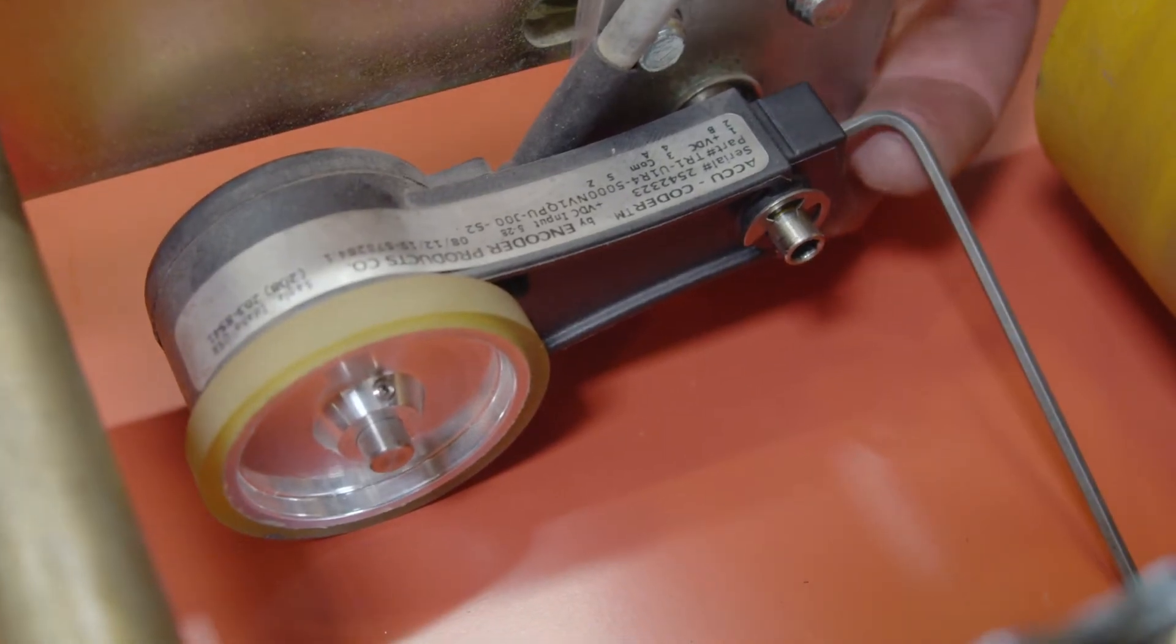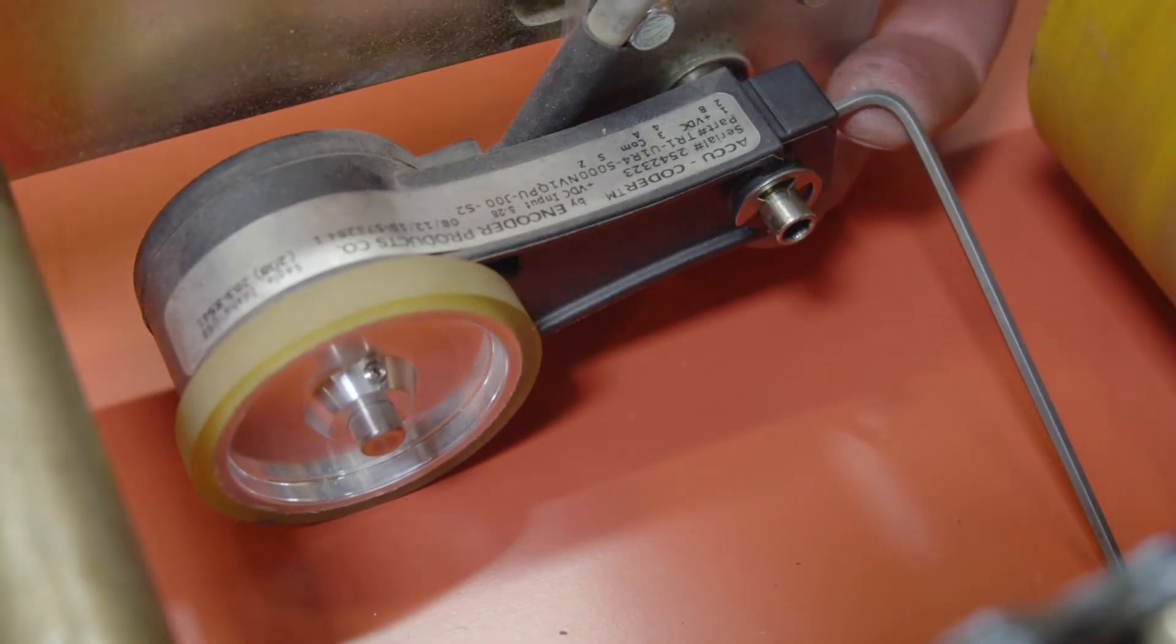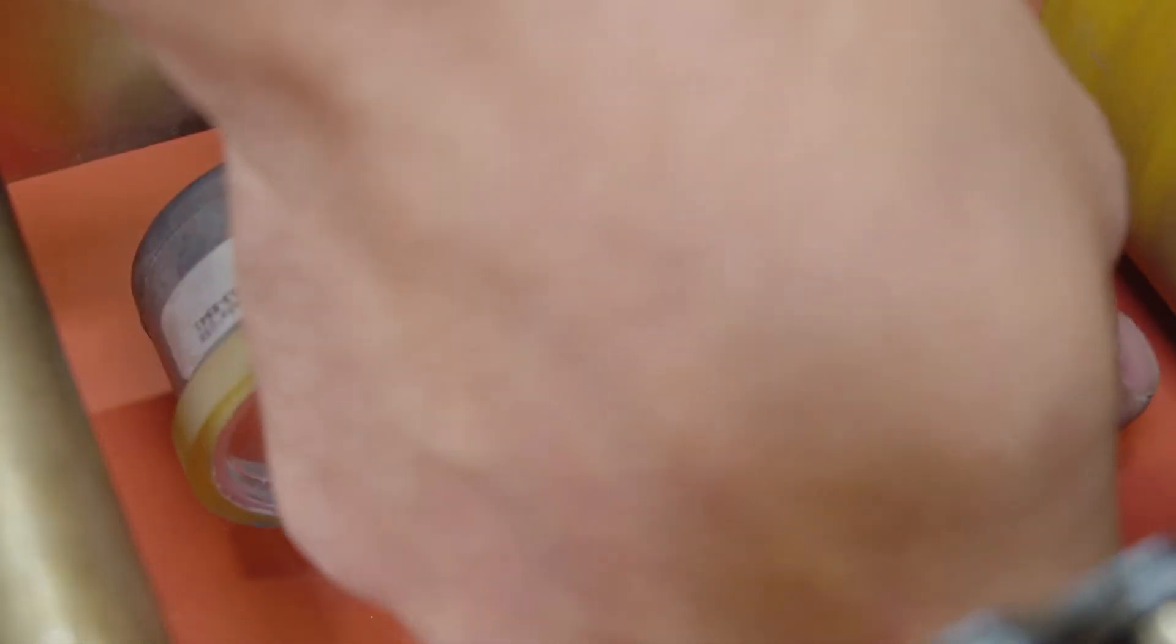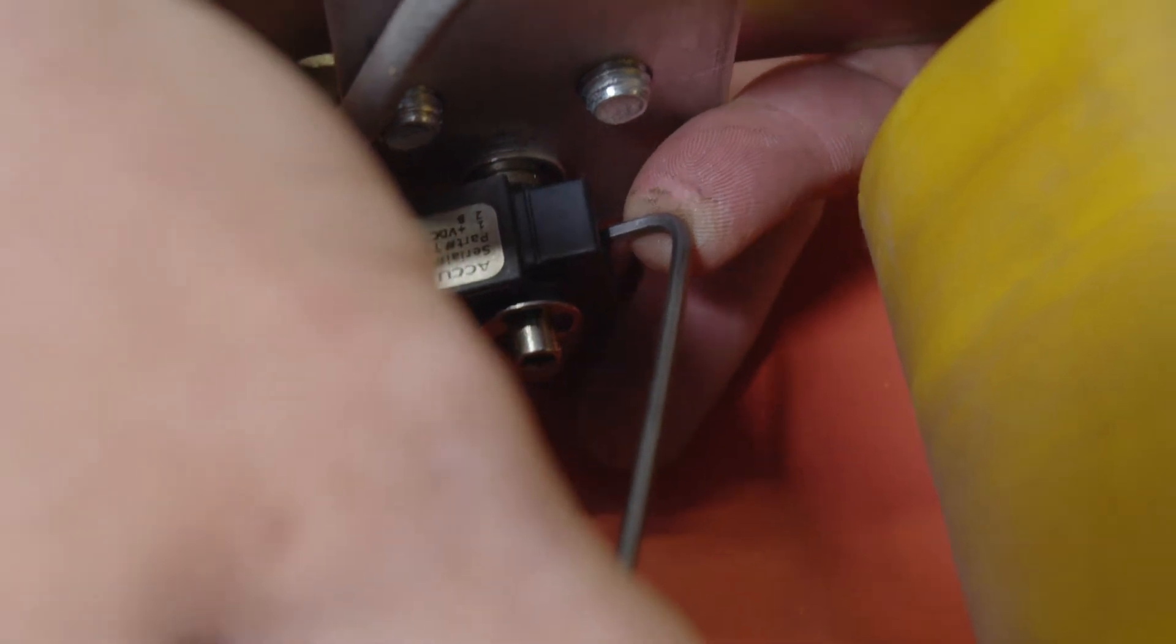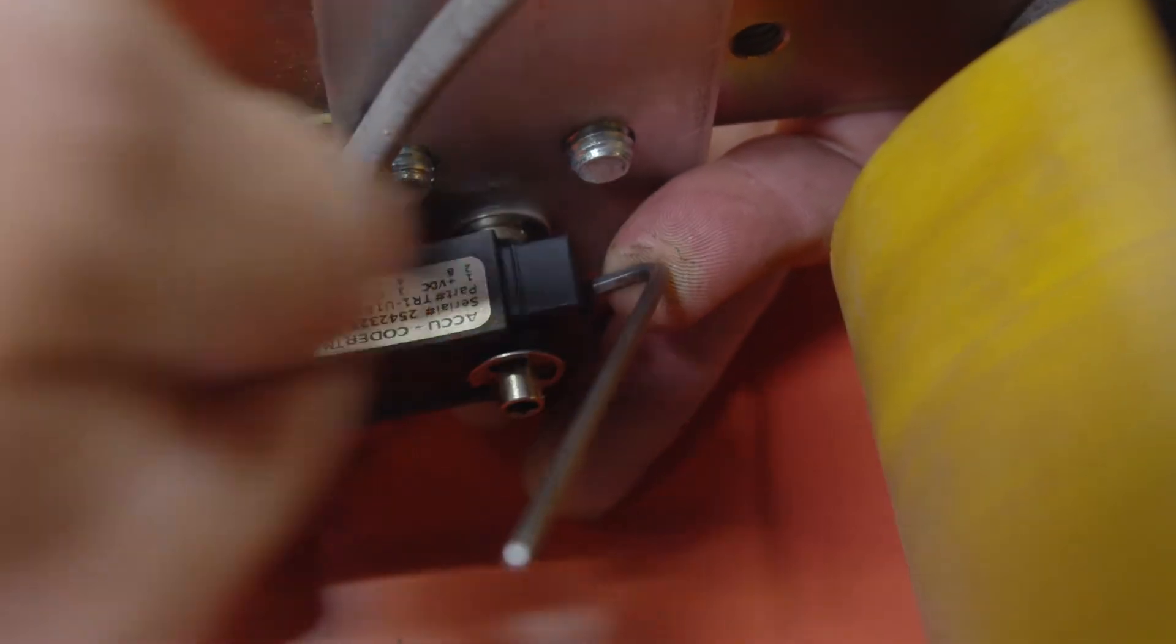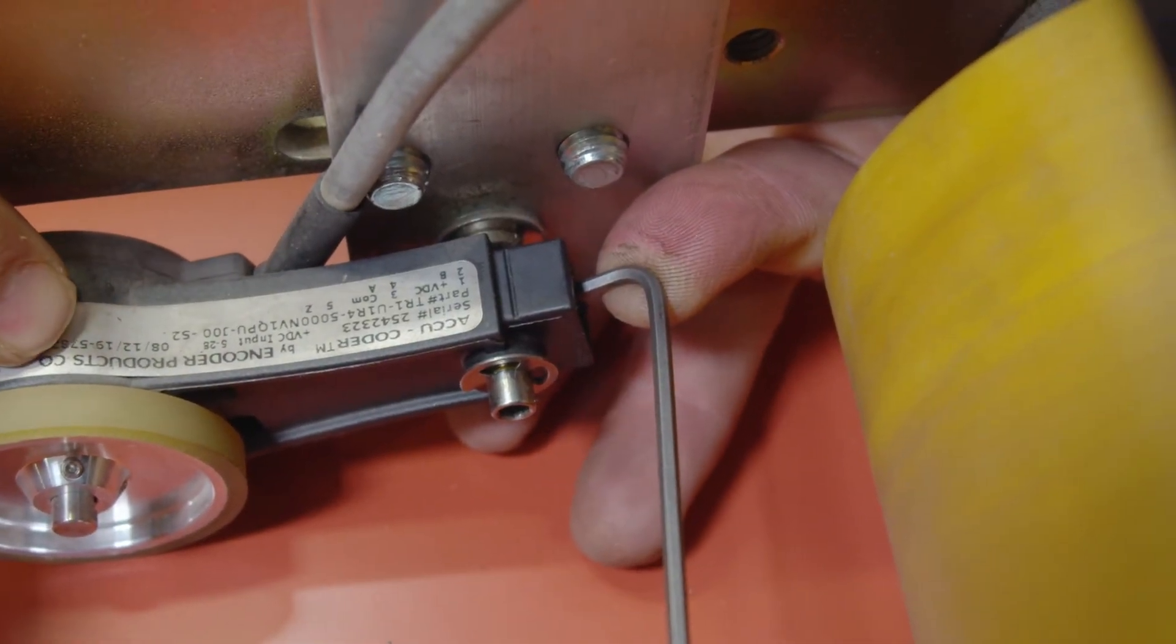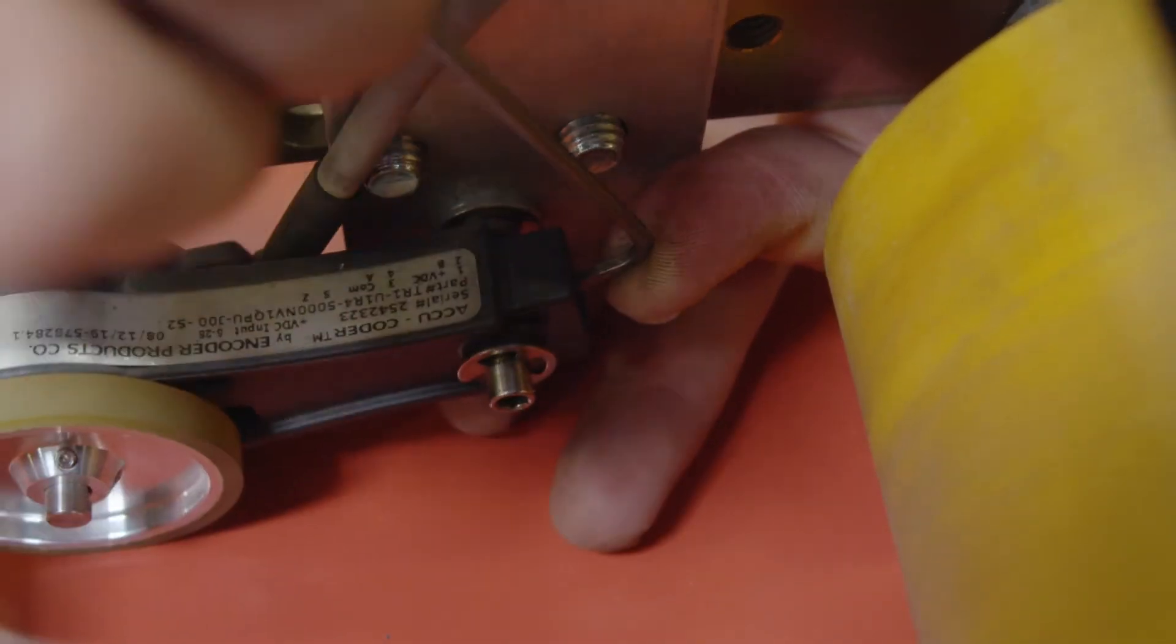Okay, so we have a 3/32 hex wrench inserted into the fastener at the rear of the encoder. What we want to do is, while lifting the hex wrench towards the sky or pivoting the hex wrench towards the encoder, we're applying pressure with this spring. We want to tighten it down at the same time.